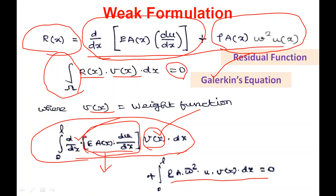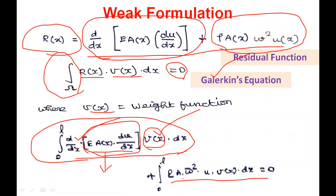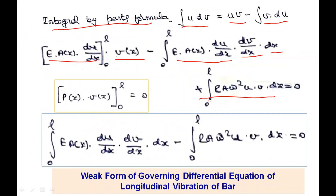Applying the integration by parts formula, we get the uv term: v·EA(x)du/dx evaluated from 0 to L, minus the integral from 0 to L of EA(x)(du/dx)(dv/dx) dx. The remaining second part, the integral from 0 to L of ρAω²u·v(x) dx, is added, giving the full equation equal to 0.